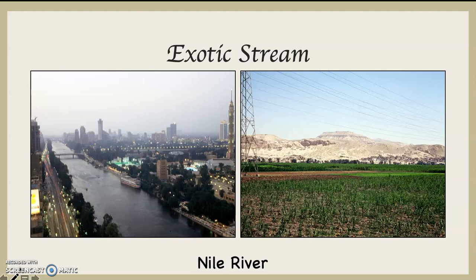The Nile flows north through the Sahara Desert. About 6,000 years ago, the people living in Egypt figured out the rhythm of that river — every year it would flood, leaving behind nutrient-rich soil. It doesn't do that anymore because of the dam. Those people began to develop their agricultural system and built one of the greatest civilizations in human history. They did this on the backs of slaves, but also on an overwhelmingly vegetarian diet.